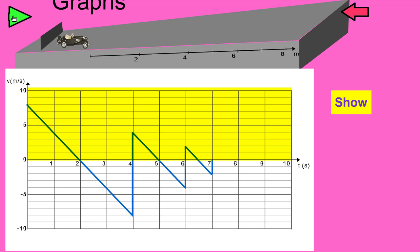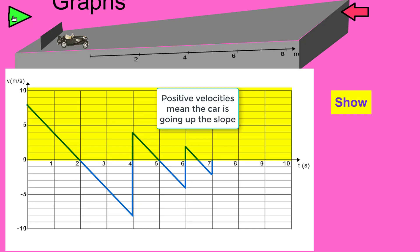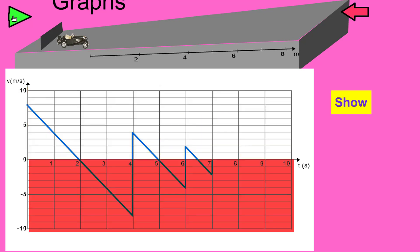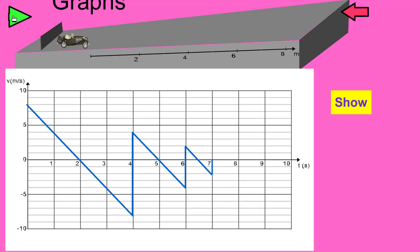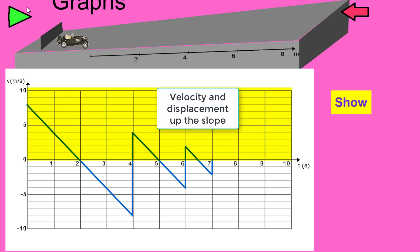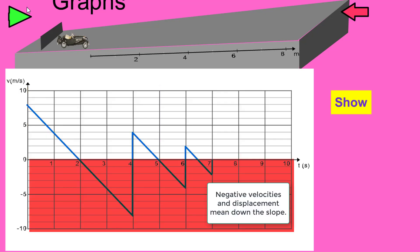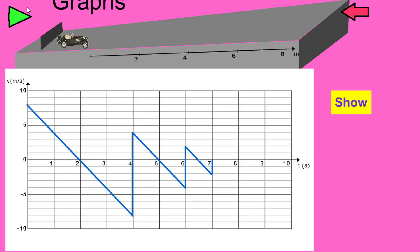Any velocity above zero means the car is going up the slope, so a positive velocity means the car is traveling up the slope and a negative velocity means the car is traveling down the slope. Likewise, a positive displacement is a distance up the slope, and a negative displacement is back down the slope. Anything above the zero axis on our graph will be positive and anything below will be negative, so anything above the zero axis corresponds to the car traveling up the slope.